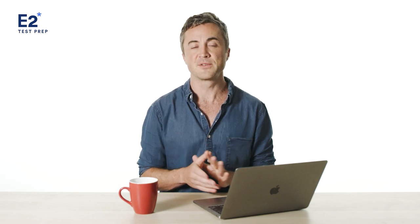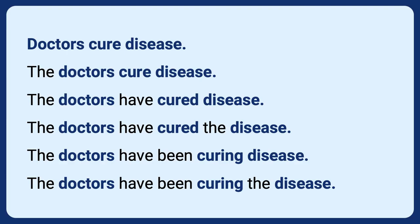In OET speaking, you're also scored on rhythm. Rhythm in English refers to the regularity of the stressed syllables. Notice how the same duration of time is used to say each sentence, even though each sentence gets longer and longer. For example: 'Doctors cure disease.' / 'The doctors cure disease.' / 'The doctors have cured the disease.' / 'The doctors have been curing the disease.' This is what rhythm is in English.